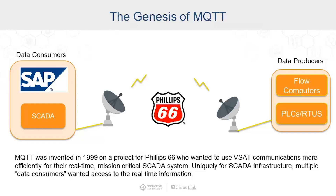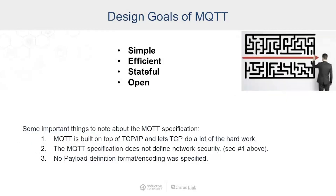Uniquely for SCADA systems at that time, they had multiple data consumers that wanted access to the real-time information that was out in the field. On this VSAT system, the aggregate bandwidth was around 300 baud.